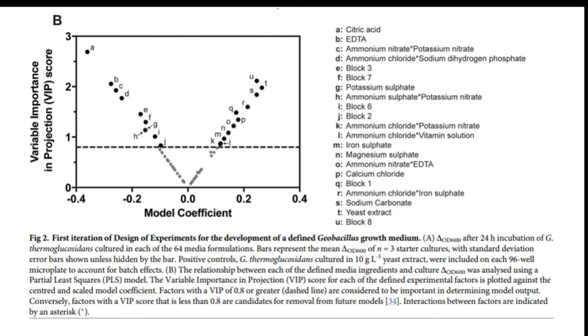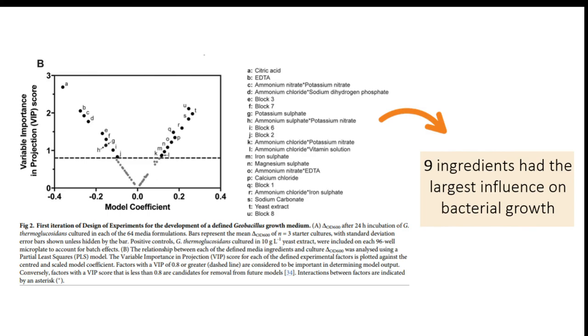With DOE, the authors were able to generate a model that provided an estimate of the effects of all 21 different ingredients. From the model, only 9 ingredients were shown to have the largest influence on bacterial growth. Remarkably, the authors were able to gain this knowledge in just 64 trials in comparison to the 17 million possible trials.